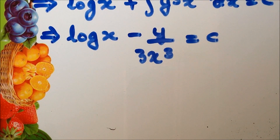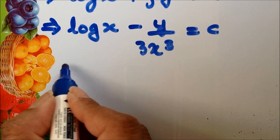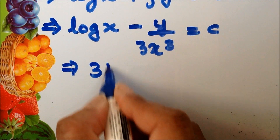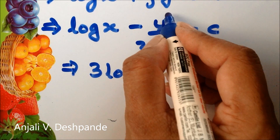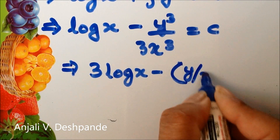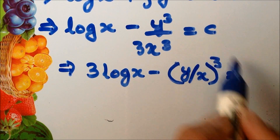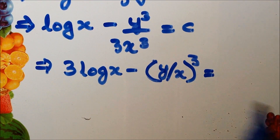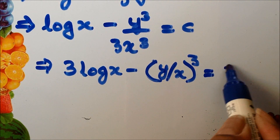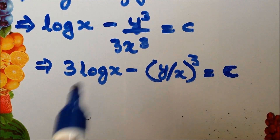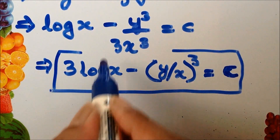We perform a small simplification step by multiplying through by 3: 3 log x − y³/x³ = c. Since 3c is still a constant, we just write c. This is the final solution of the given inexact differential equation.